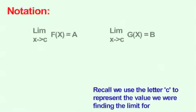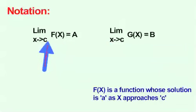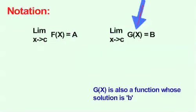So let's start with some notation. Recall we used the variable c to represent the value we were finding the limit for. f is a function whose solution is a as x approaches c, and g is also a function whose solution is b.